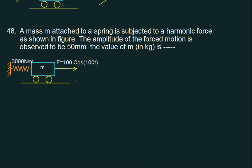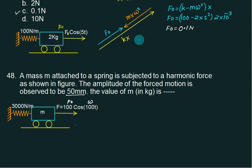This time, we are given a mass-spring undamped system. We are given F0, and whether it's a cosine or sine function doesn't matter. Omega is 100, F0 equals 300, K equals 3000, and we have to find the mass. The maximum amplitude is 50 mm. The diagram remains the same — we have the same diagram here. So F0 equals K minus M into omega-squared, multiplied by X.